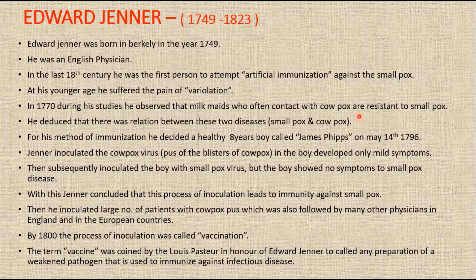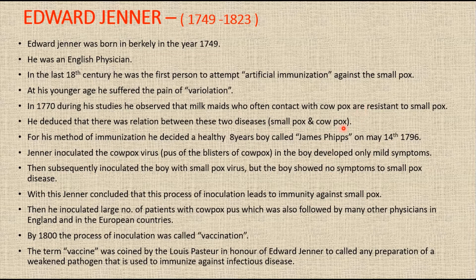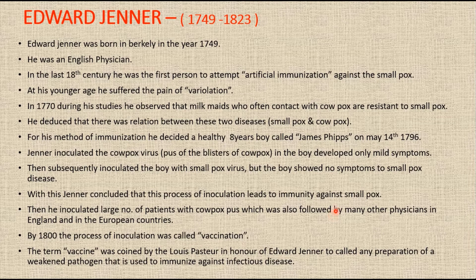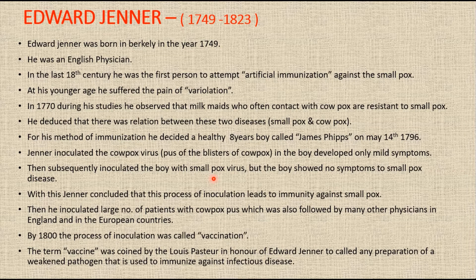Cowpox is a cattle disease that was commonly prevalent in Jenner's time, appearing in the form of pustules on the udders of cows. Similarly, pustules or lesions sometimes developed on the hands of milkmen who handled cows containing this cowpox. These cowpox lesions were much similar to those of smallpox, but they were localized and caused only mild symptoms of the disease without any complications.